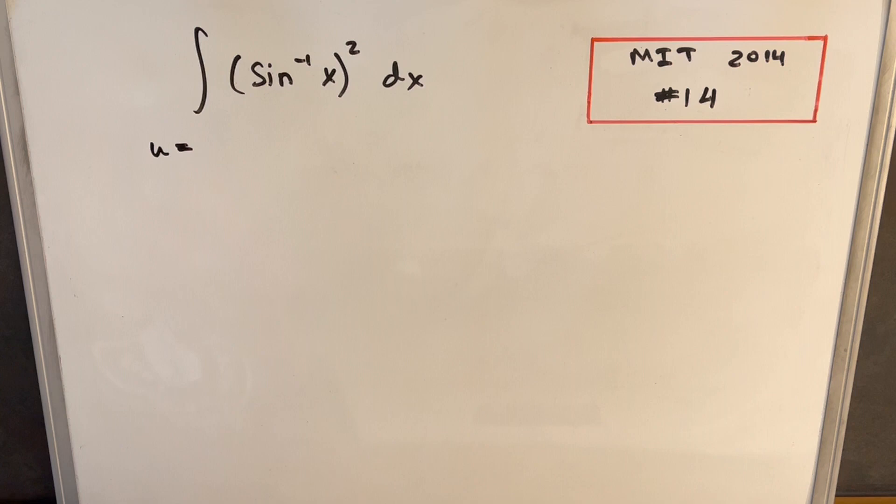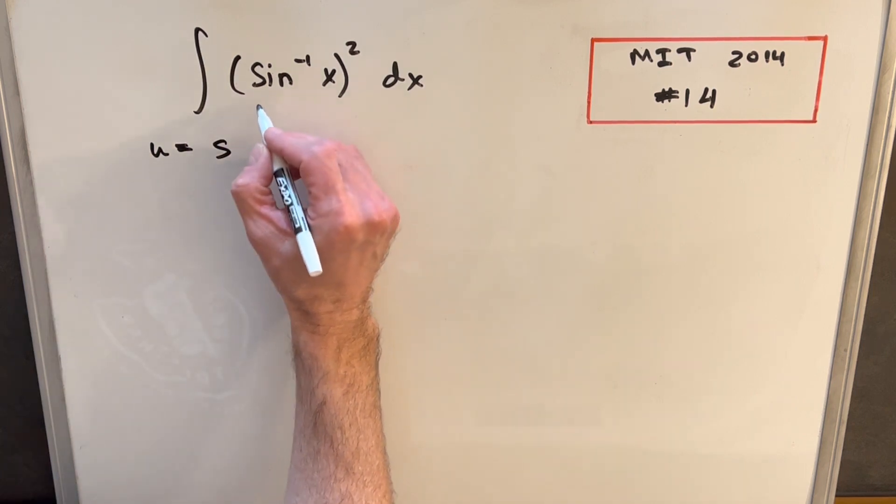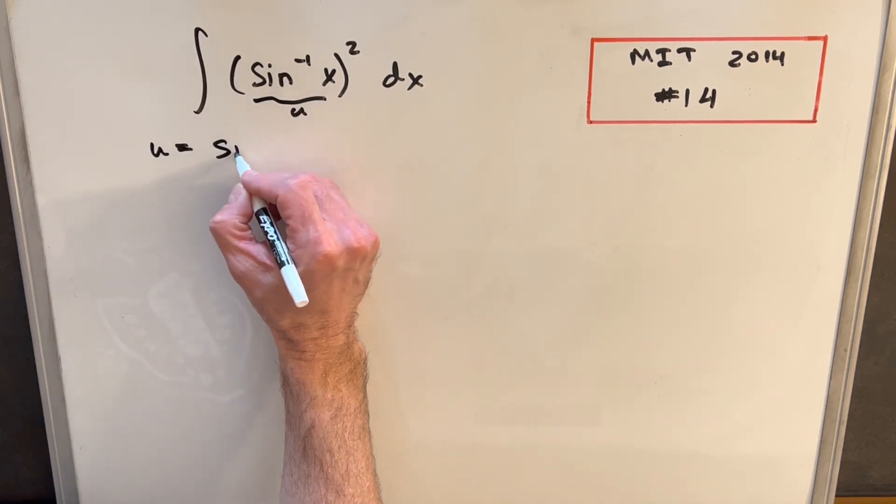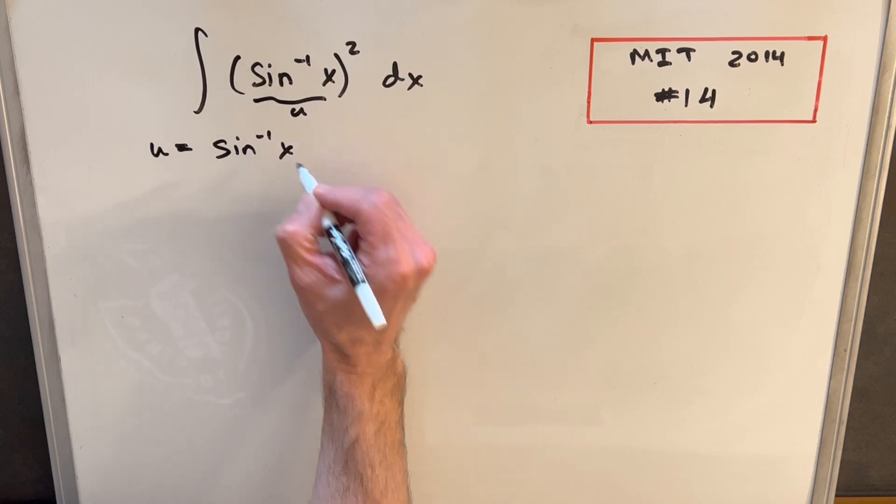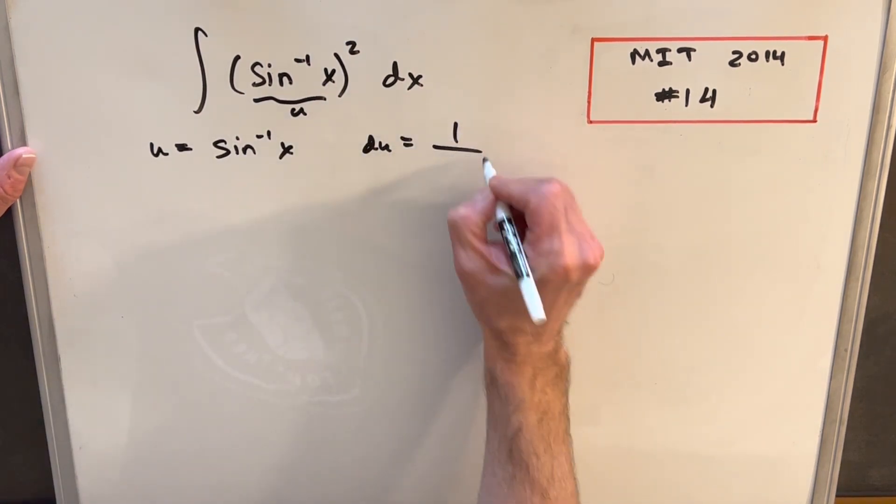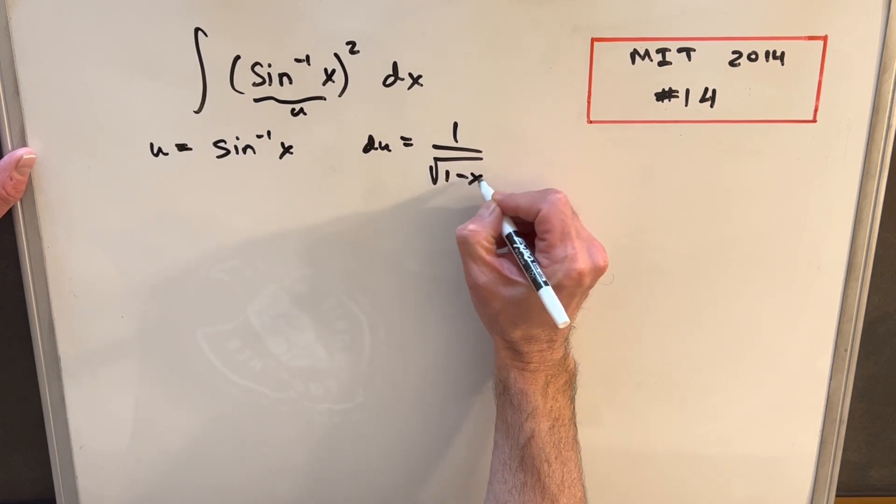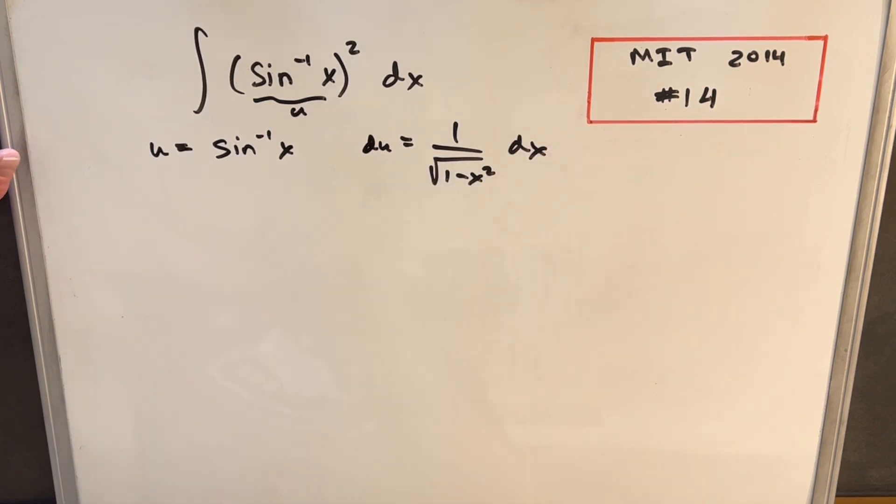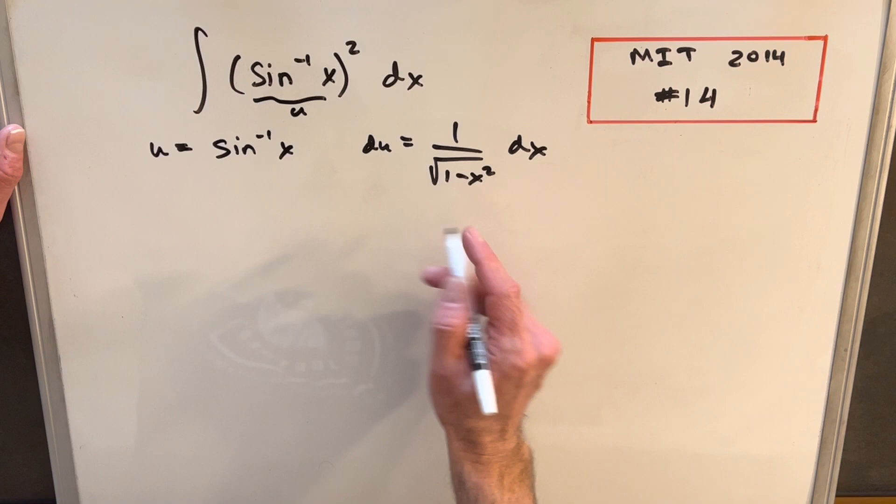And just do it in two steps. So if I set my u equal to what we have here, u will be arcsine of x. Then taking the derivative, our du is going to be 1 over square root of 1 minus x squared dx.